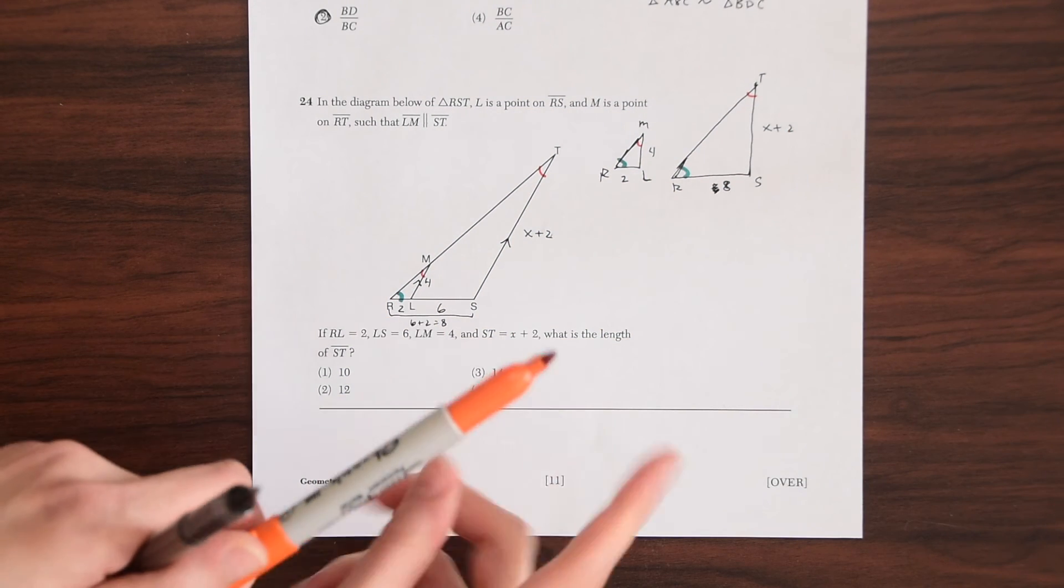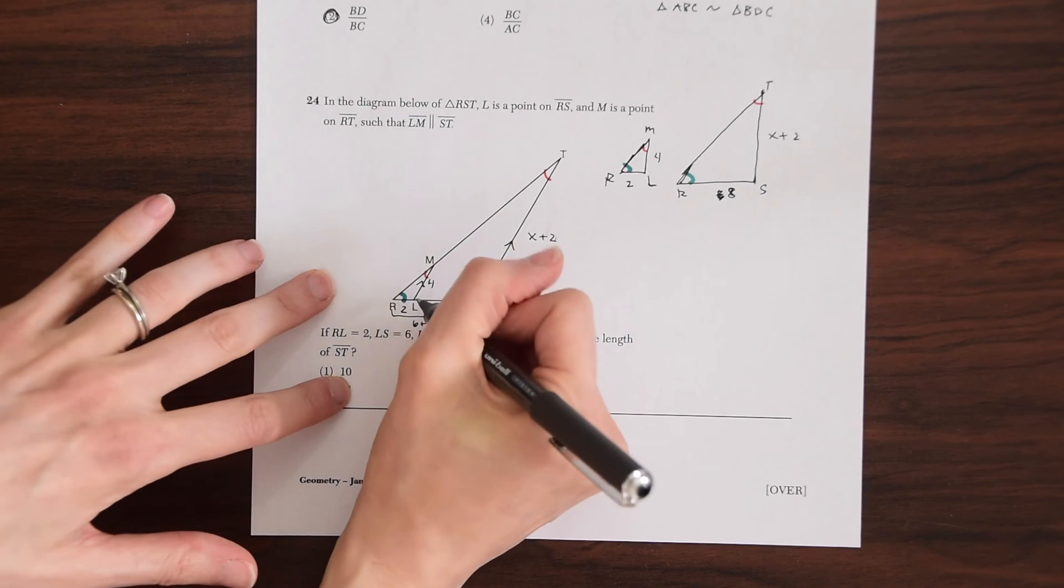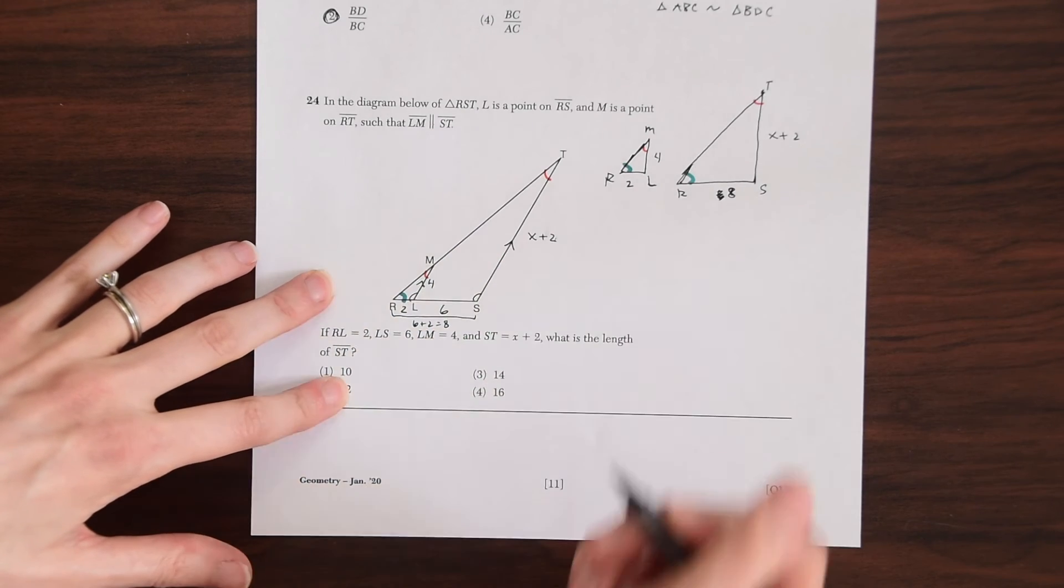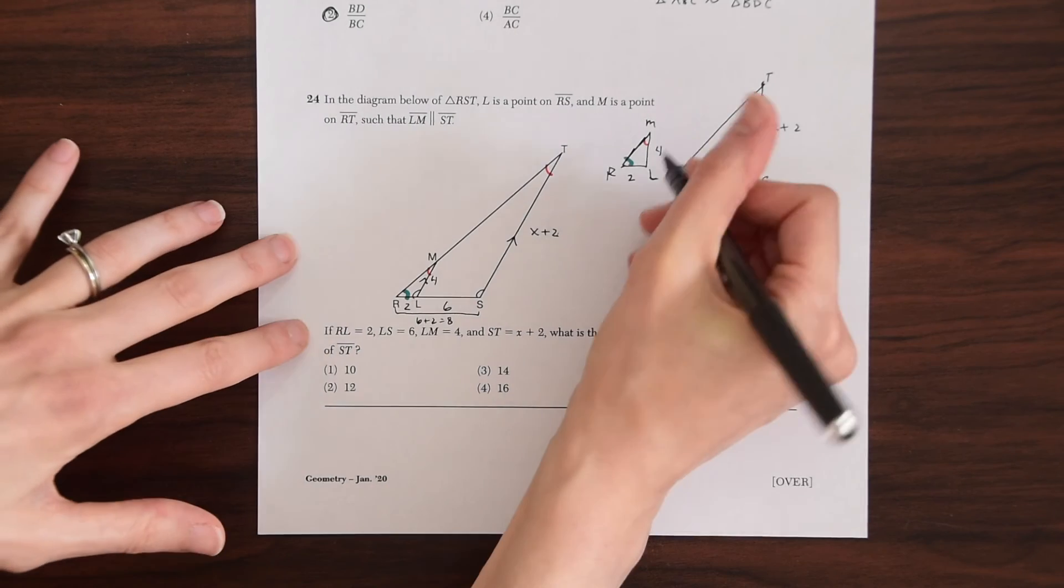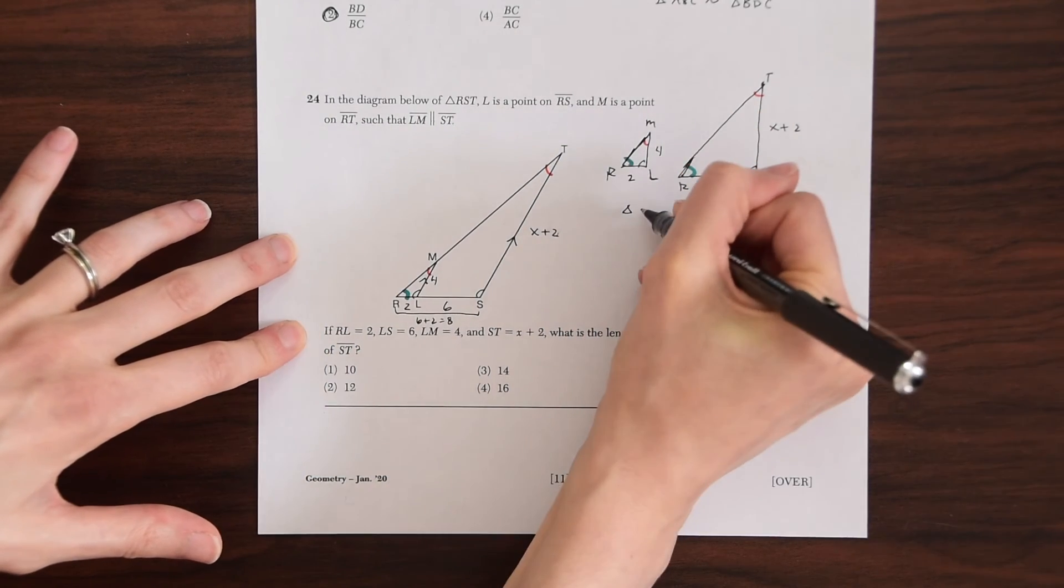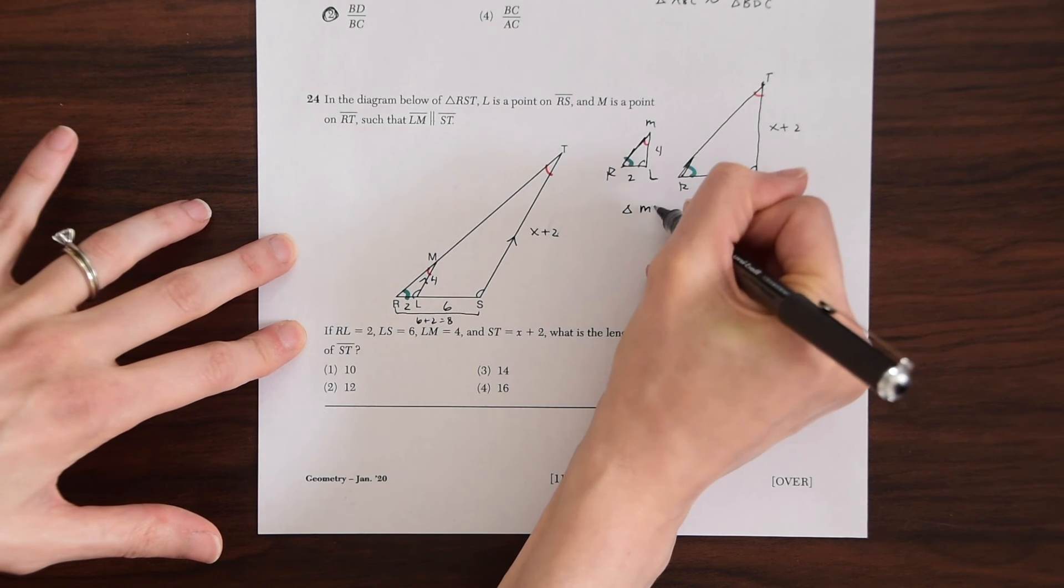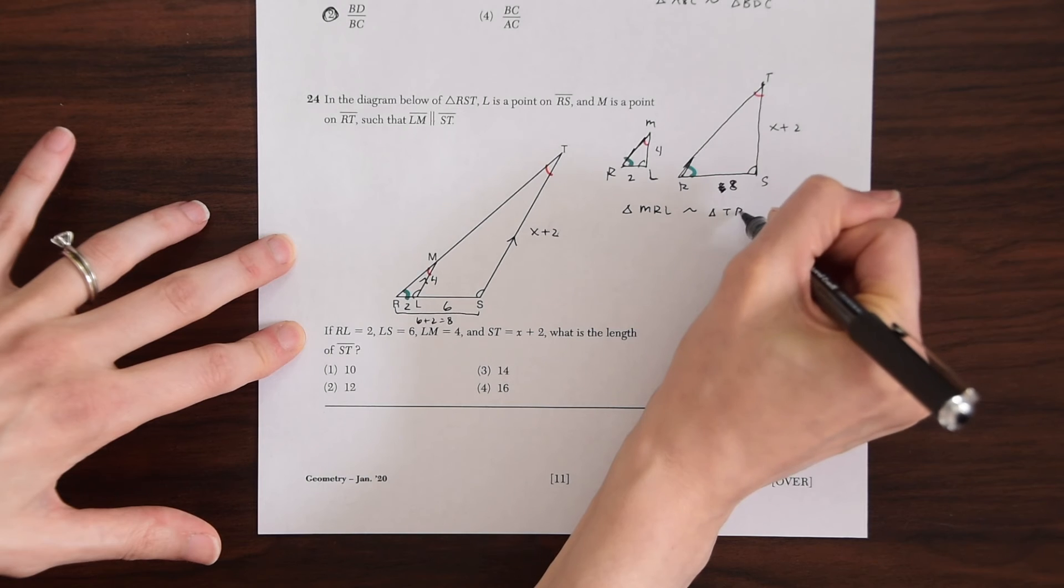So we know those are congruent to each other. So if we have congruent angles like this, that means these two triangles are similar. So we could say, we could say triangle MRL is similar to triangle TRS. So when that happens, we know the angles are congruent and we also know the sides are in proportion to each other when two triangles are similar.